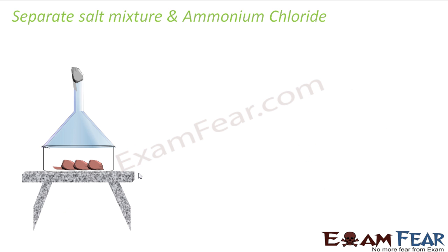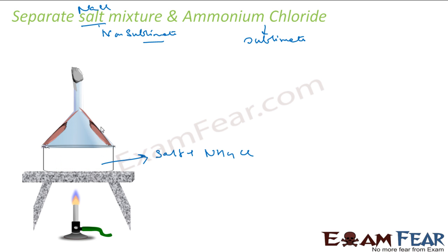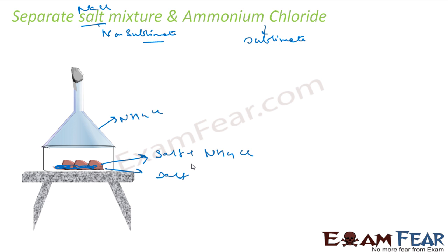Suppose we have a mixture of salt and ammonium chloride (NH4Cl) and we have to separate them. Ammonium chloride is a sublimate, while NaCl (common salt) is non-sublimate. We can take advantage of this and use the sublimation process. Put the mixture in a container and heat it. The NH4Cl, since it sublimates, converts into gas and gets collected as solid in the funnel above, while the salt is left behind. This is how you can separate them — a pretty easy process.